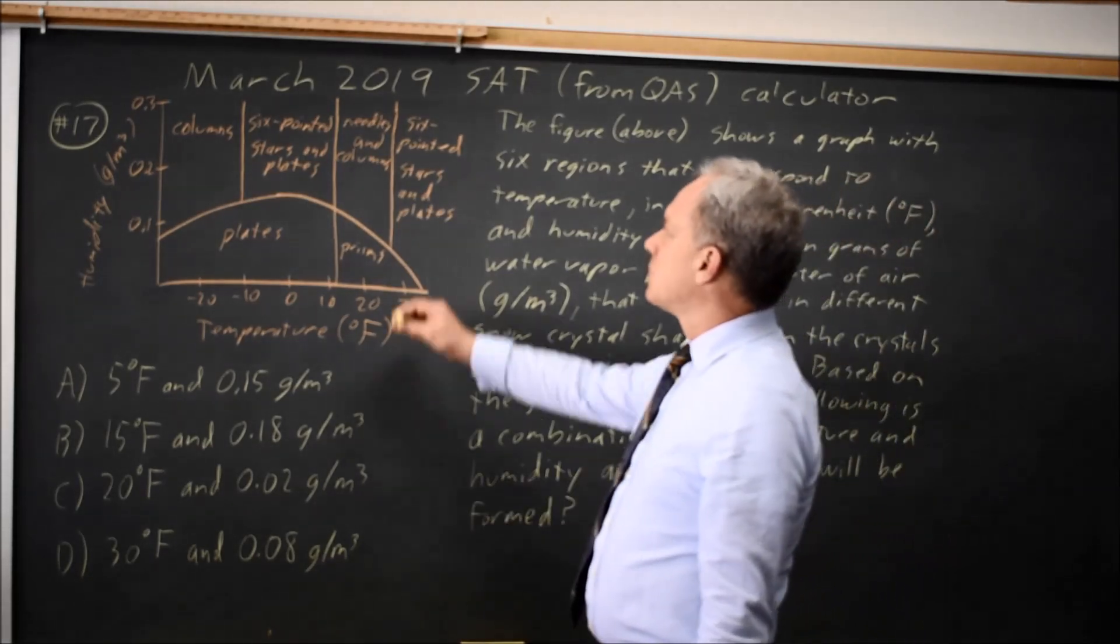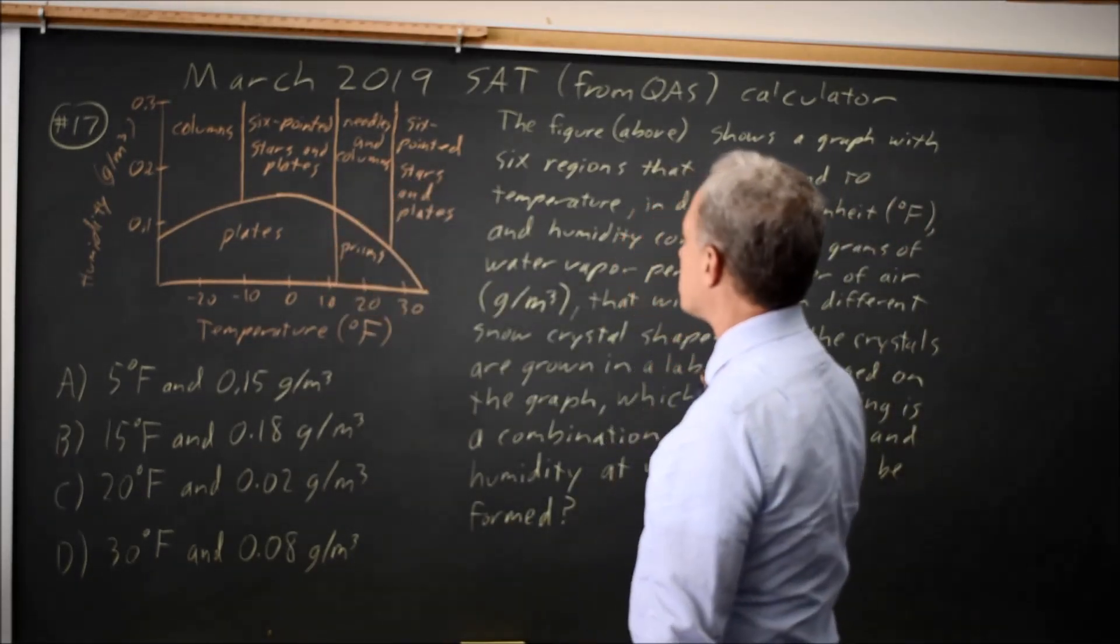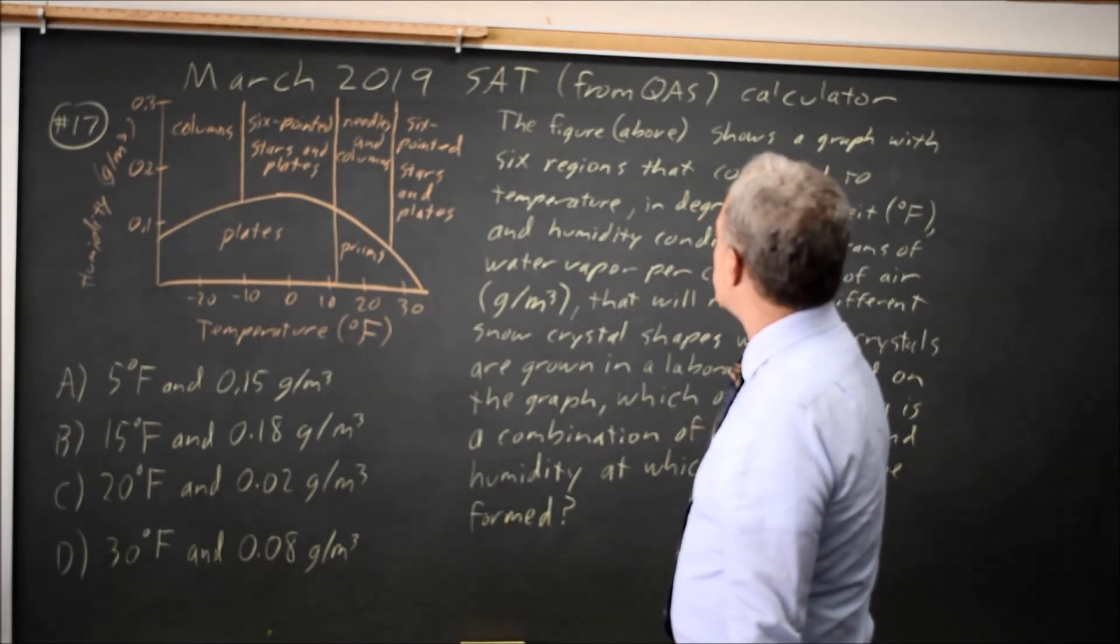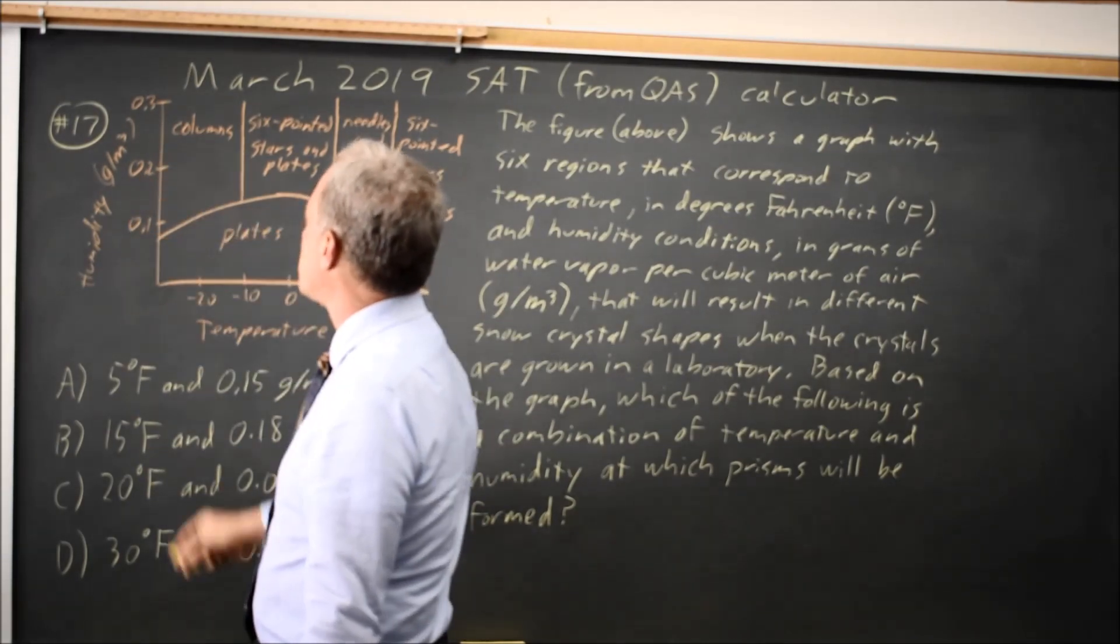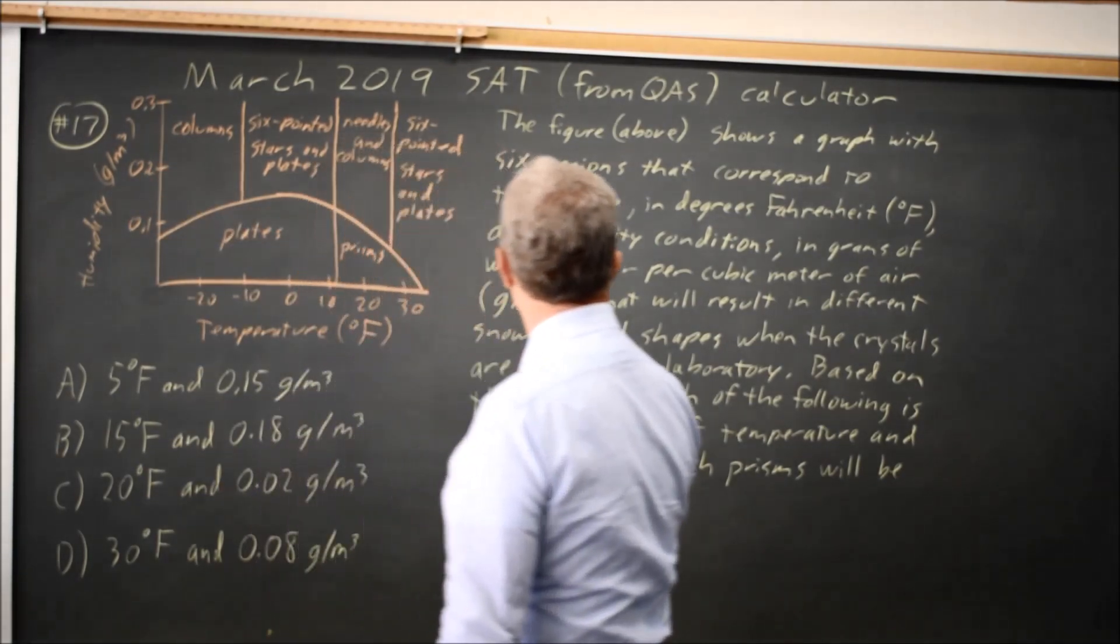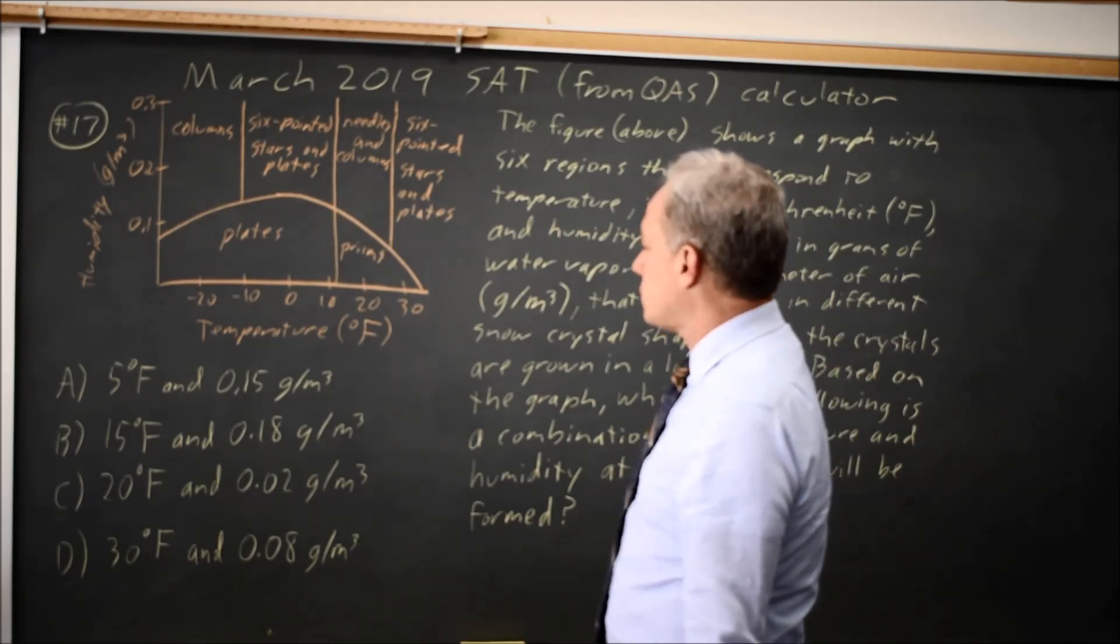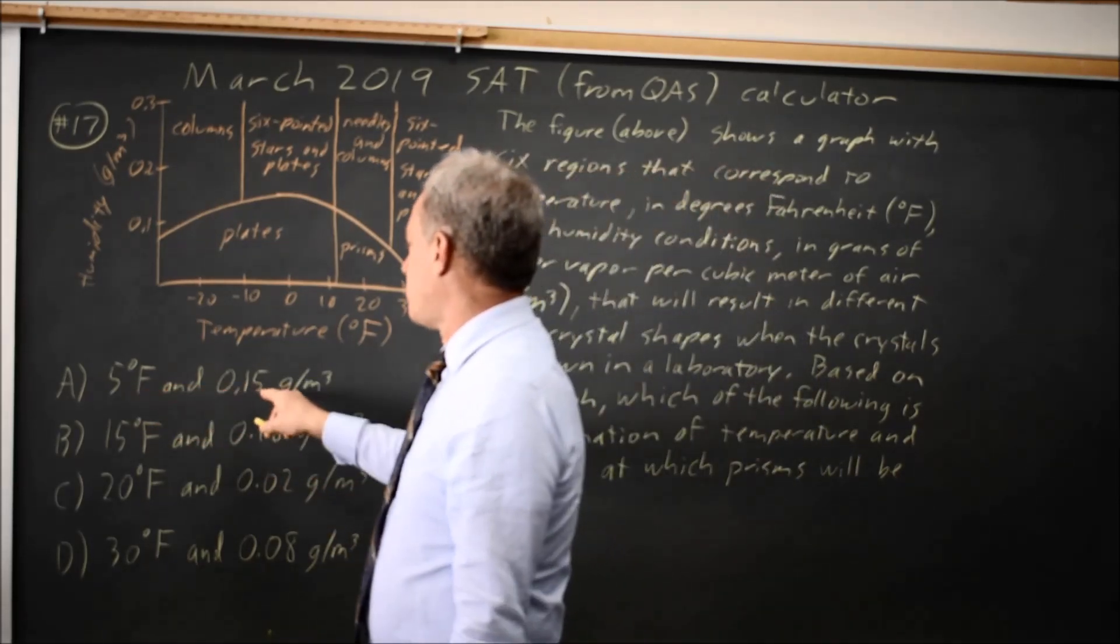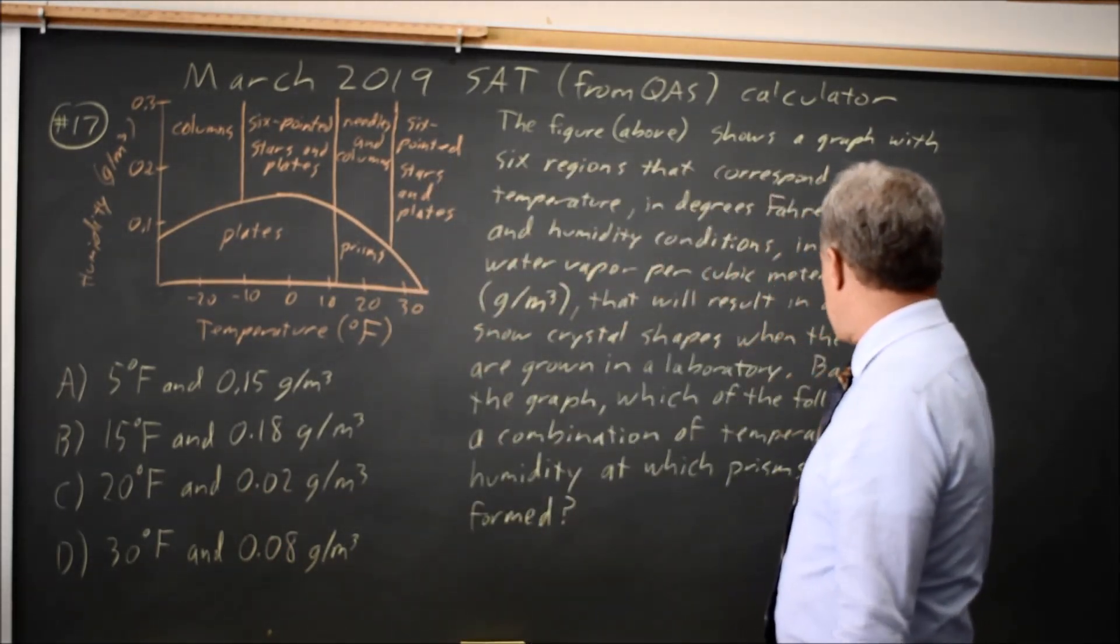Okay, let's take a look at this. College Board gives us a graphical figure showing the regions corresponding to temperature on the horizontal axis and humidity on the vertical axis for different shapes of snow crystals. And the question is, which temperature and humidity from the ones listed will result in prisms?